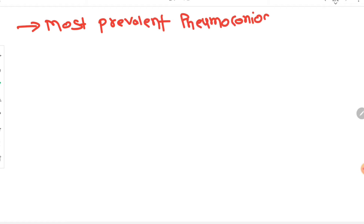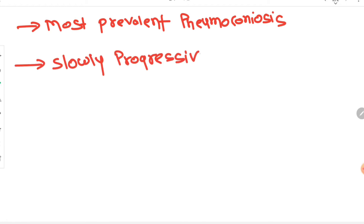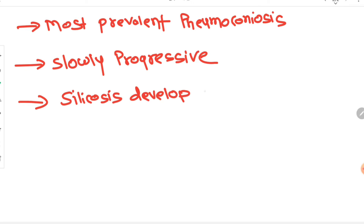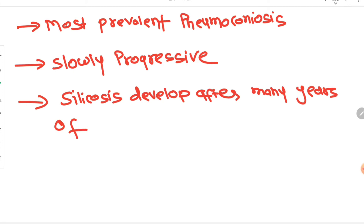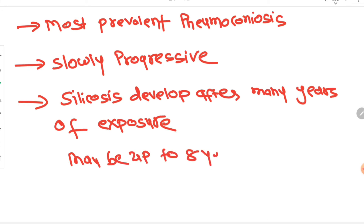Among all pneumoconiosis, silicosis is the most prevalent variety. It is also very slowly progressive — silicosis develops after many years of exposure to silica, sometimes up to eight years after exposure.